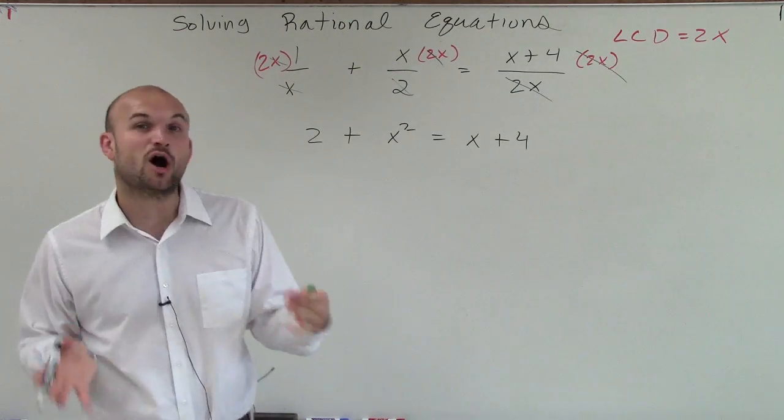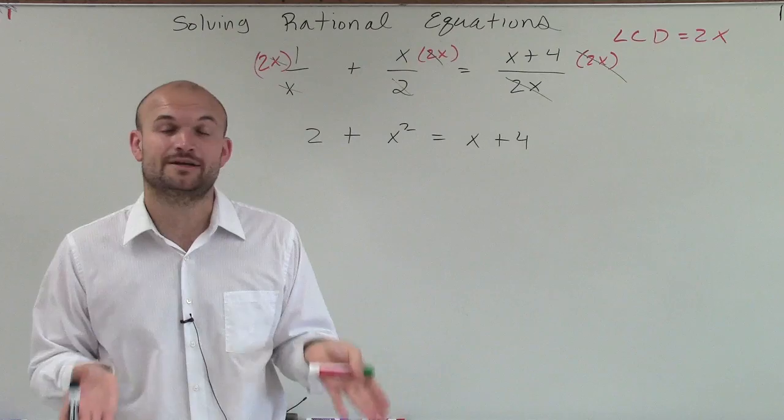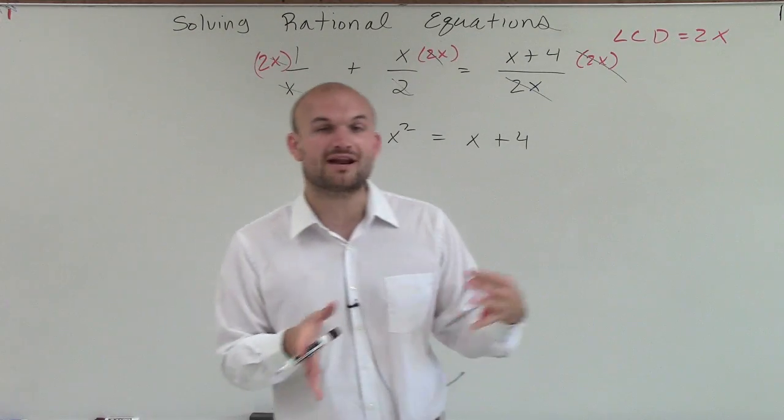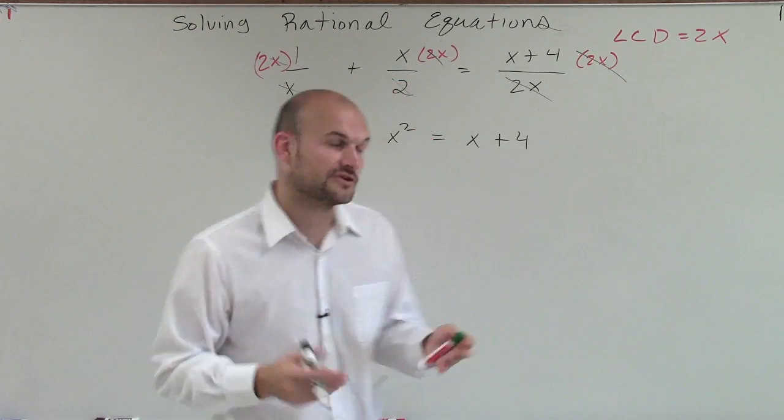So when we have a quadratic, we want to get all of our variables to the same side and set it equal to 0. The reason why we want to set it equal to 0 is because we want to factor it and try to apply the 0 product property.